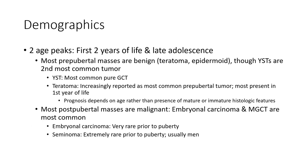There are two age peaks: the first 2 years of life and in the late teenage years around puberty. Teratomas are the most common prepubertal testicular tumor and most present in the first years of life. Prognosis depends on age rather than whether the histology is mature or immature. Most post-pubertal teratomas are malignant.